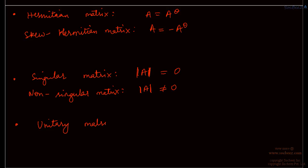Then we have something known as a unitary matrix. If the product A times A^θ equals I — the identity matrix of the same order as A — then we call the matrix A unitary. An important consequence of this is that the determinant of A is one.